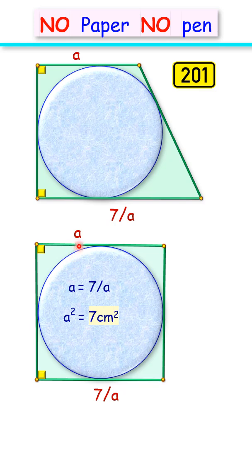But A² is the area of this square. And area of the square is also equal to the area of this trapezium. The area of the trapezium is 7 cm². And that's our answer.